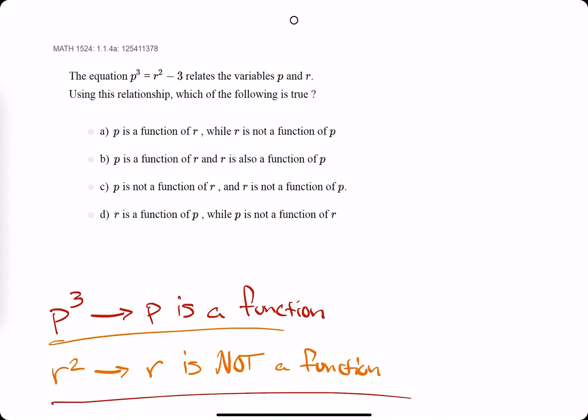Okay, so in this next problem, using the same rule as the last video, we see a p cubed and we see an r squared in our equation up here.